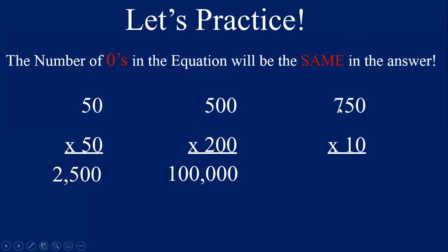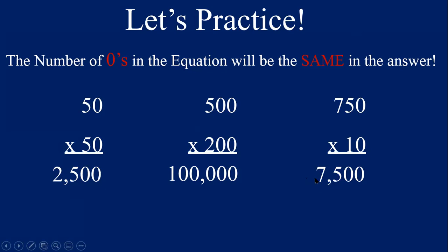Let's try 750 times 10. Again, multiplying by 10, we could just put a zero behind 750 and quickly get 7,500. Or, using the identity property — any number times 1 is that number — we can look at this as 75 times 1. The first answer is 75. Count your zeros: one, two — write two zeros after the 75, and that also gives us the correct answer of 7,500.